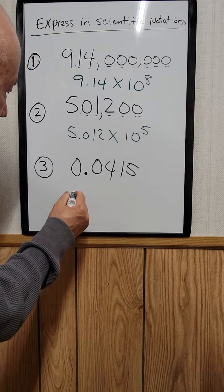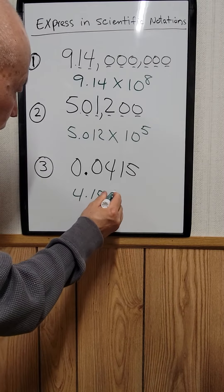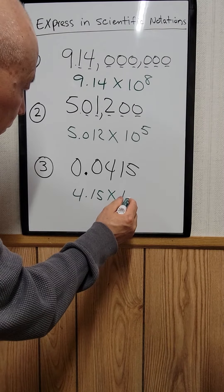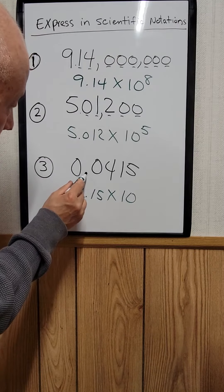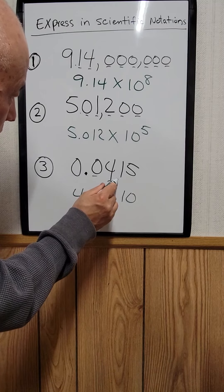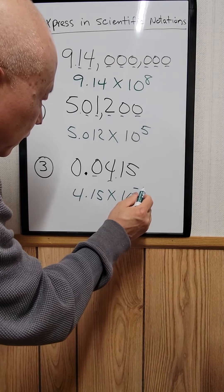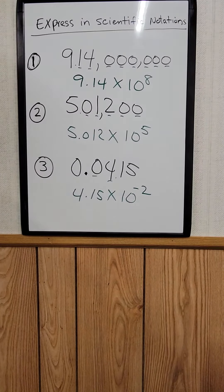How about this one? For this one, we just write 4.15 times 10. So after the decimal point right here, you count it: 1, 2, right here. That's where you move the decimal point, 2, so you write that as negative 2.